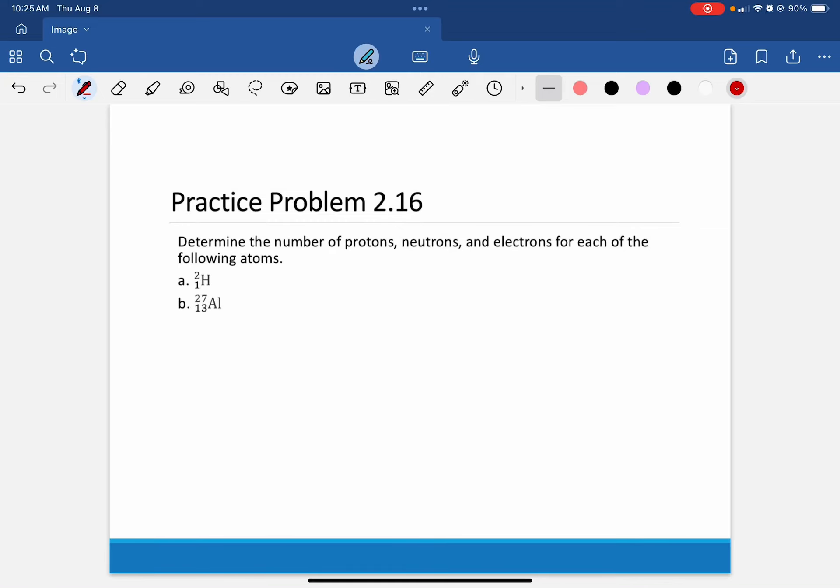Practice Problem 2.16 reads: Determine the number of protons, neutrons, and electrons for each of the following atoms.